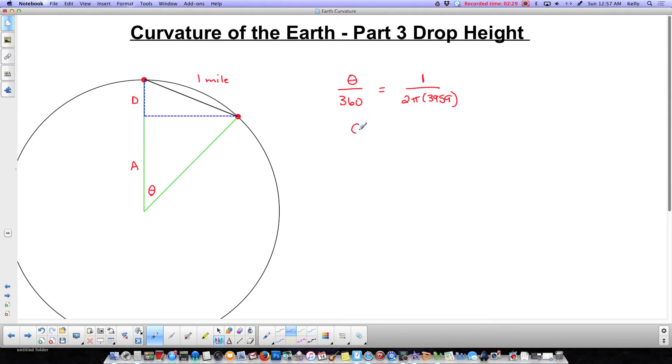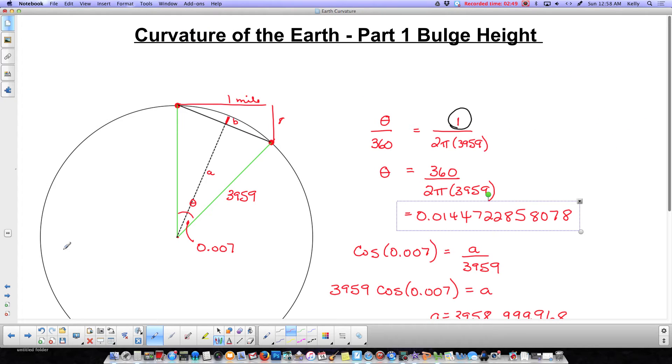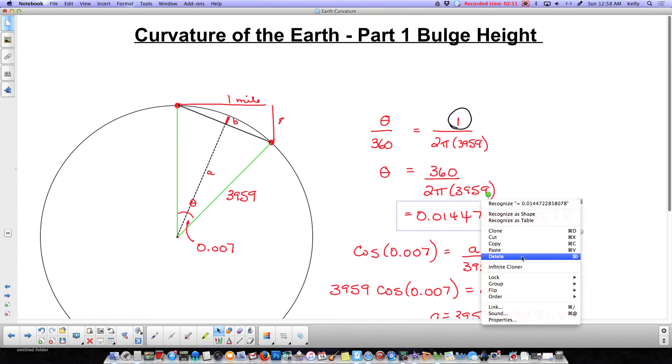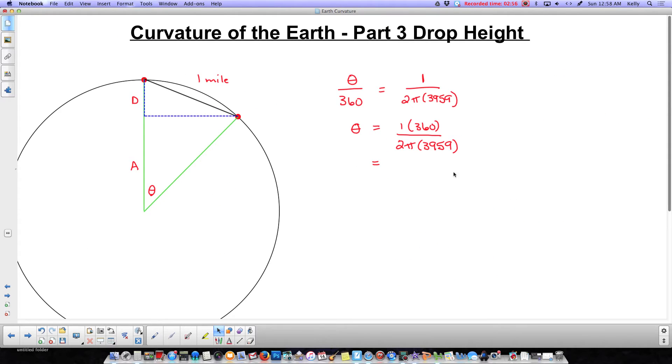Now to calculate theta, I'm going to multiply both sides by 360. So I do the 1 times 360, and then we're going to divide by the 2 pi times 3959. Now you'll notice that that's actually exactly the same calculation that we did over here. So I'm just going to do a copy and a paste so that I don't have to write all of those numbers down again. And there's my lovely number.